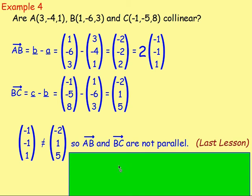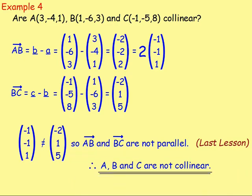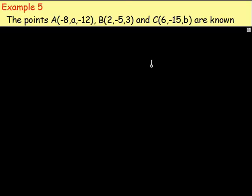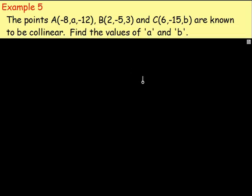Since AB and BC are not parallel, the points are not collinear. Next example: the points A(-8, A, -12), B(2, -5, 3) and C(6, -15, B) are known to be collinear. Find the values of A and B.